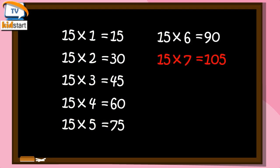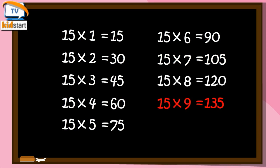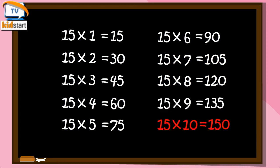Fifteen sevens are one zero five. Fifteen eights are one twenty. Fifteen nines are one thirty five. Fifteen tens are one fifty.